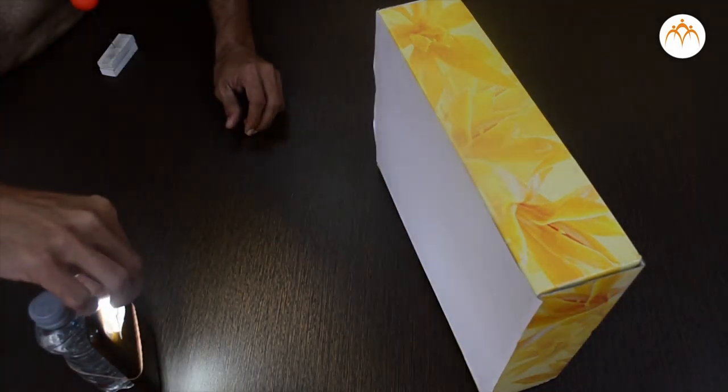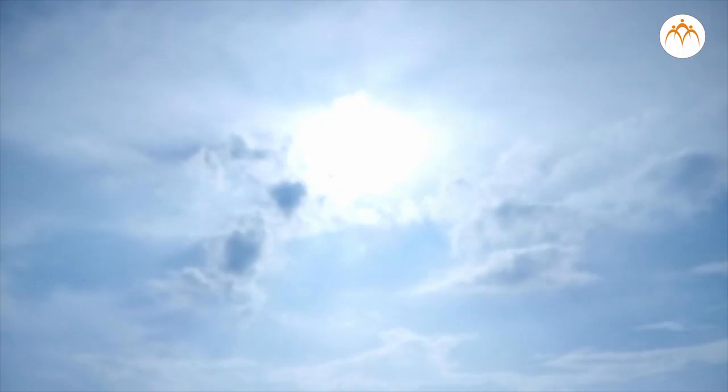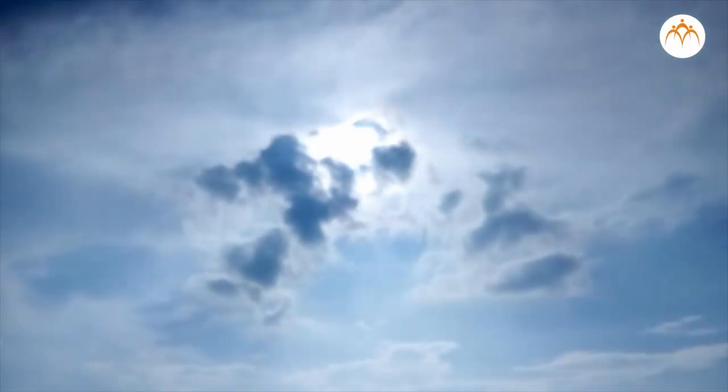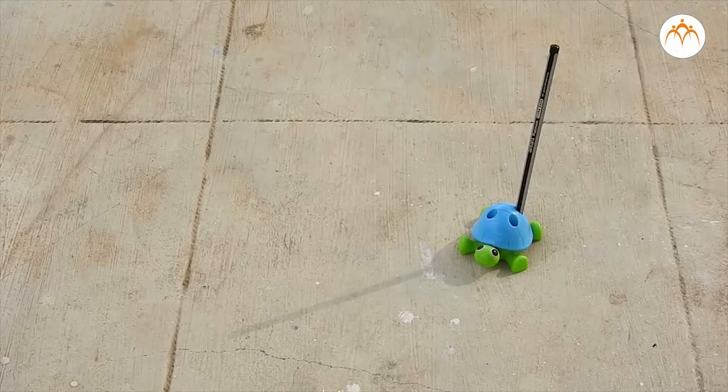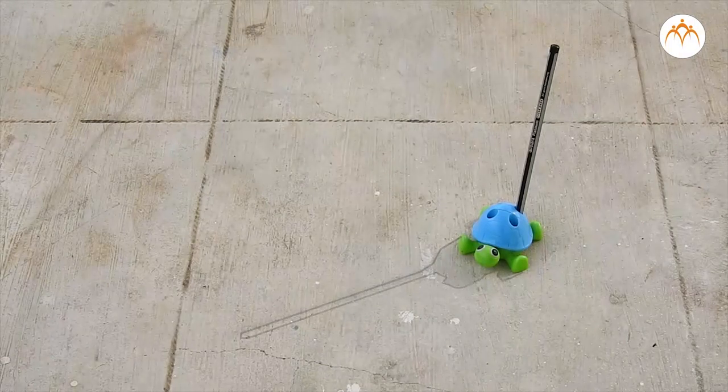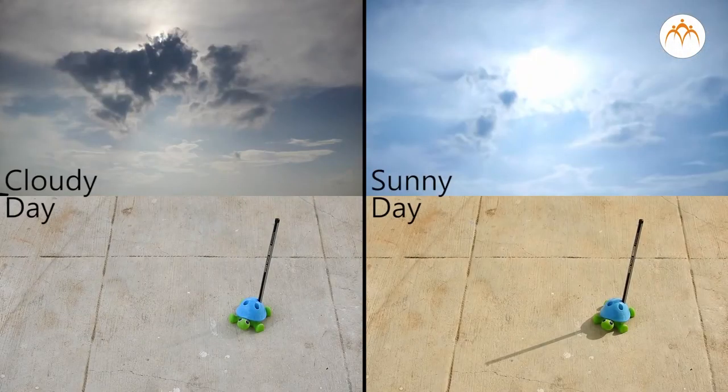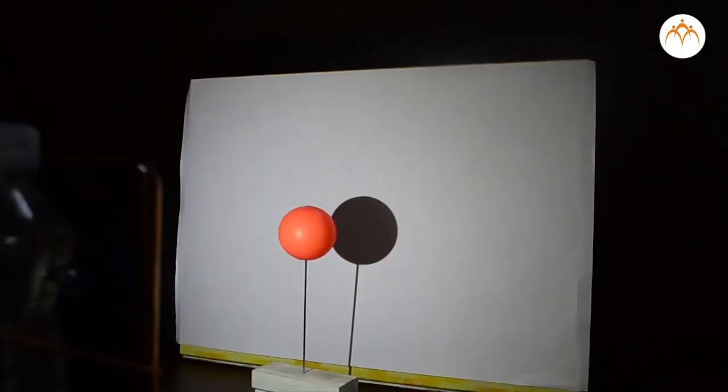We can use tracing paper to reduce the intensity of the flashlight. Increasing layers of paper reduces intensity of light source. A strong light will produce a shadow with a sharp edge.